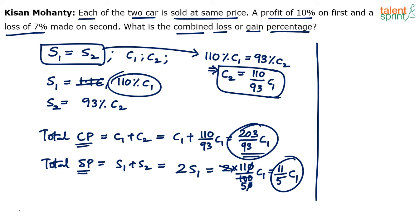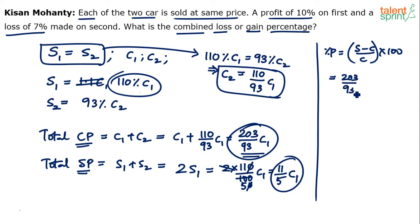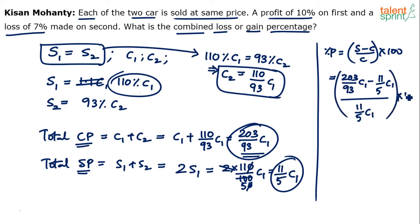Total selling price and total cost price are both known. Now find out the profit or loss percentage using the formula: (S minus C) divided by C into 100. Substituting: total selling price is (11/5)C1 and total cost price is (203/93)C1. C1 cancels out. We get 203 by 93 and 11 by 5. It looks like we are getting a negative answer, which would indicate a loss.